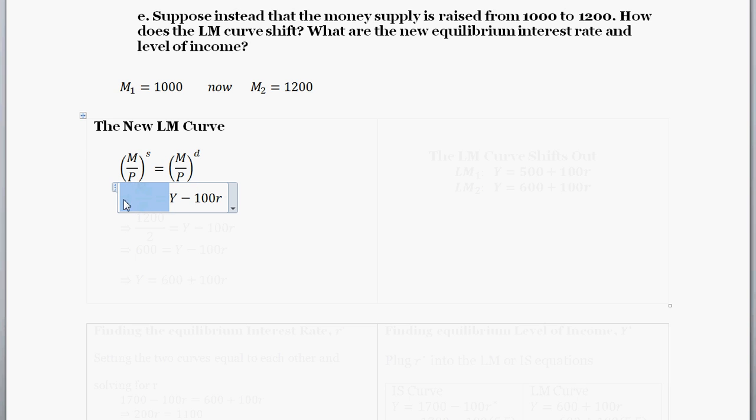And then the money supply is just the real money supply. So it's the money supply that we were given here divided by the price level. Plugging in values for the money supply, we're given that the new money supply is $1,200. The price level we've been given is 2, so that equals Y minus 100R.